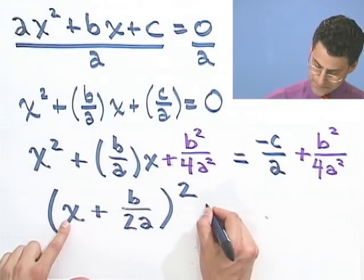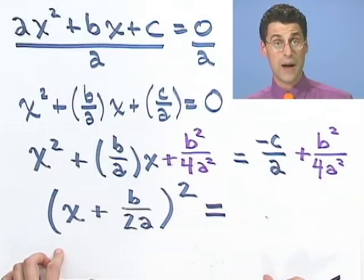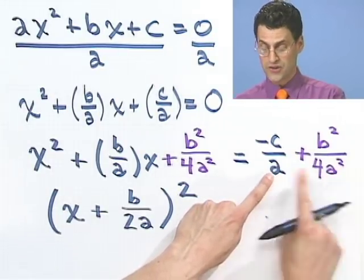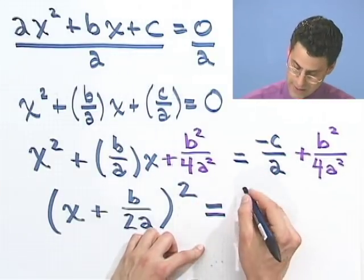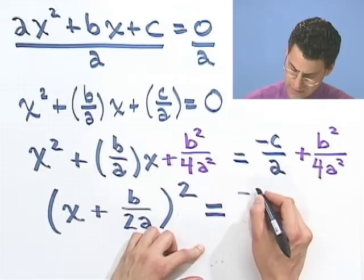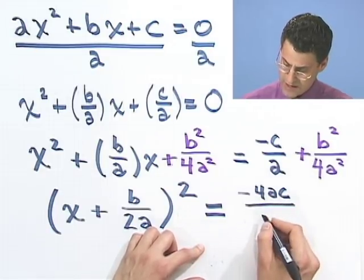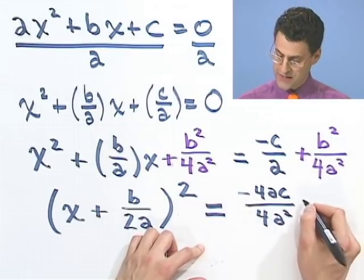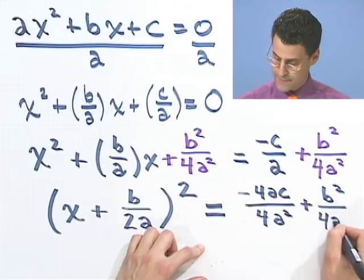On this side, what does this give me? Well, I want to get a common denominator here and combine. So I have an a here, but I need a 4a squared. So I'll see a minus 4ac on top. And on the bottom, I'll have a 4a squared. But don't forget that term, plus b squared over 4a squared.